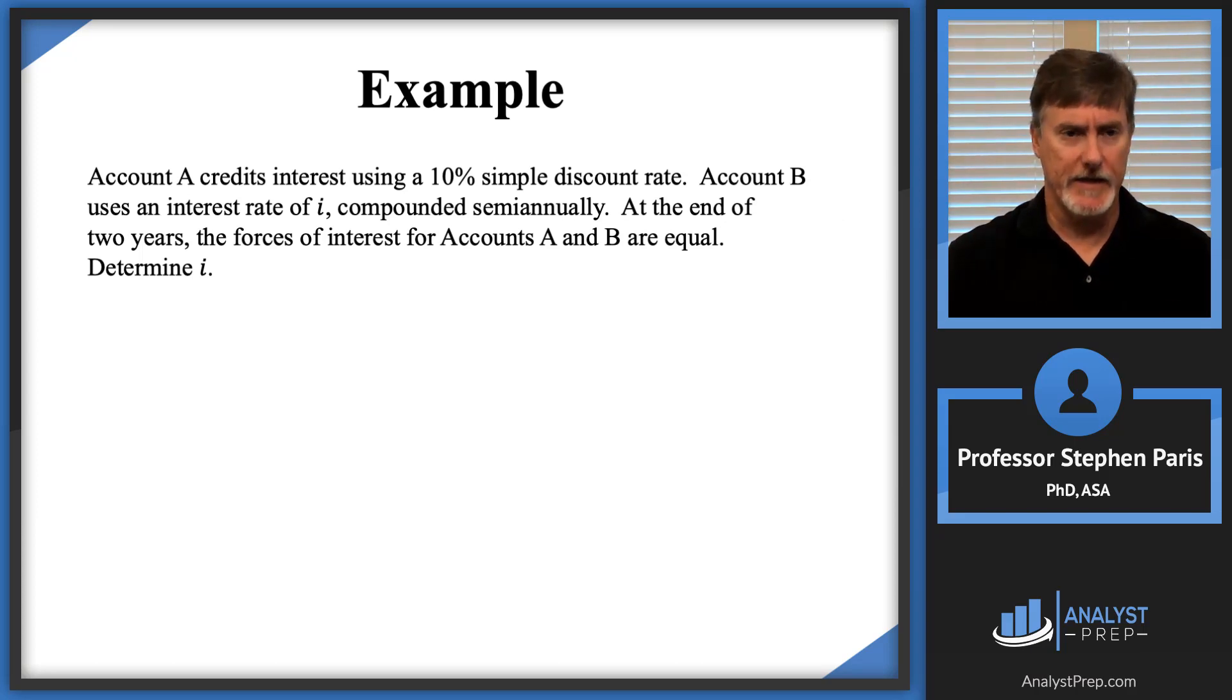In this example, we have an account A that's crediting interest using a 10% simple discount rate. Account B uses an interest rate of I compounded semi-annually. We're told at the end of two years,